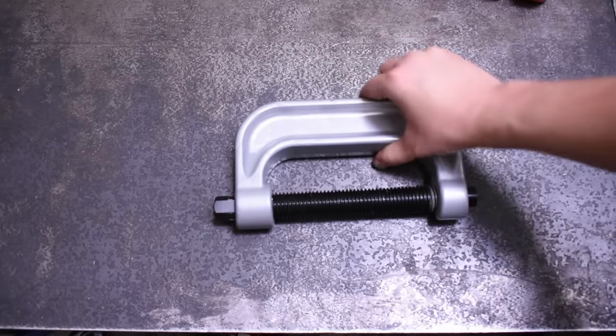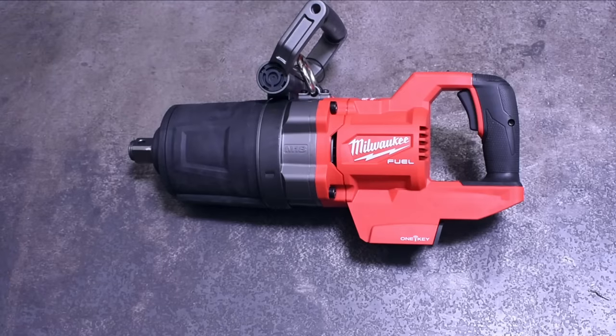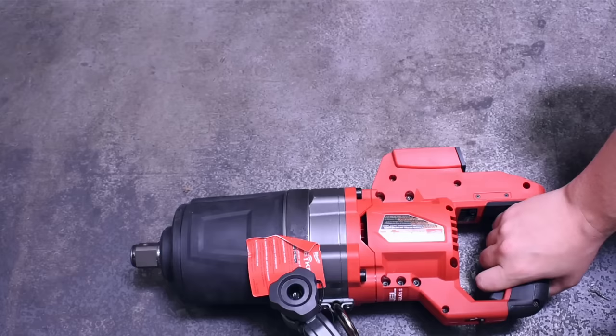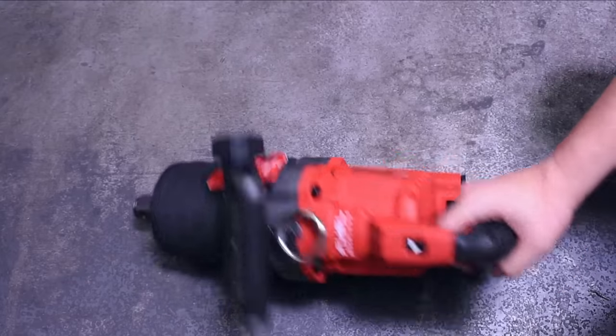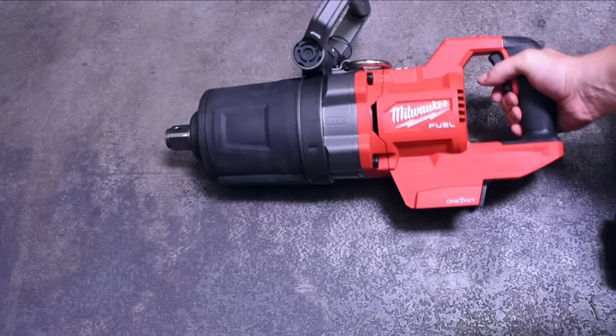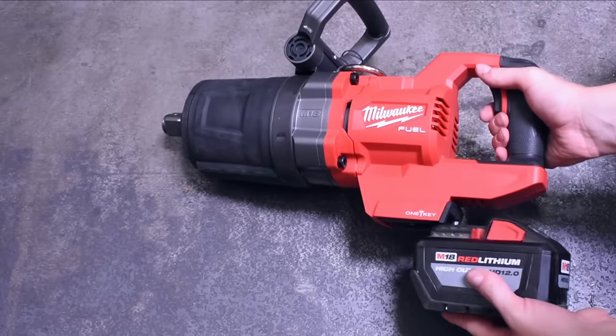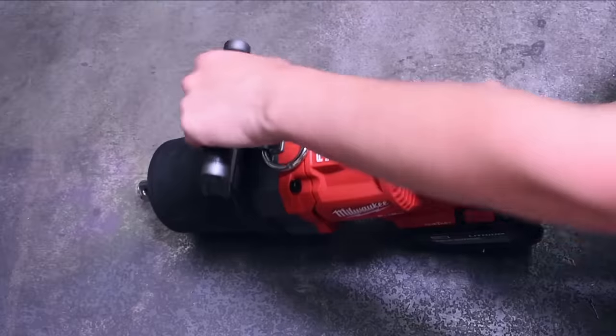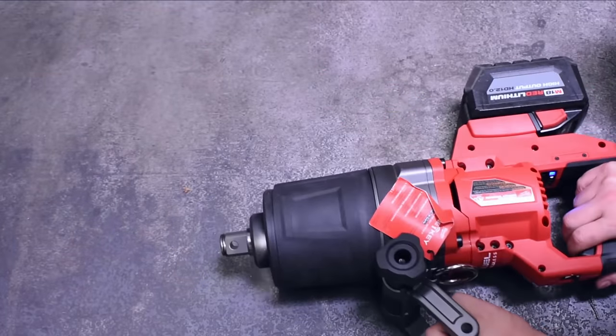They must sell as many as they do for a reason, right? The reviews are overall pretty positive. Are those just DIY guys using it once on a newer vehicle, or people who actually give these the beans? Today we're finding out with the help of our new 2868-20 Milwaukee 1-inch D-handle, which advertises a cool 2000 foot-pounds of torque.